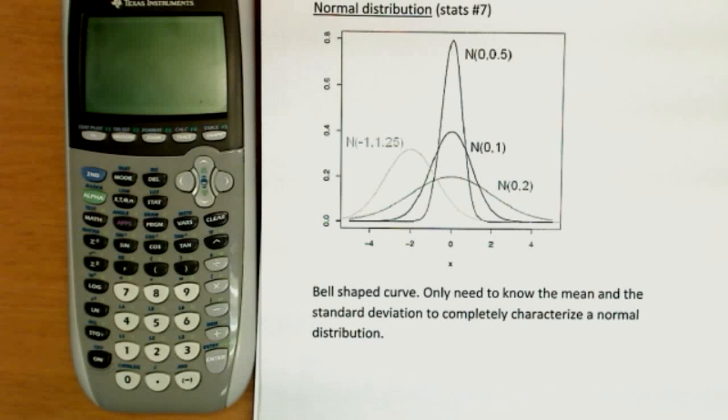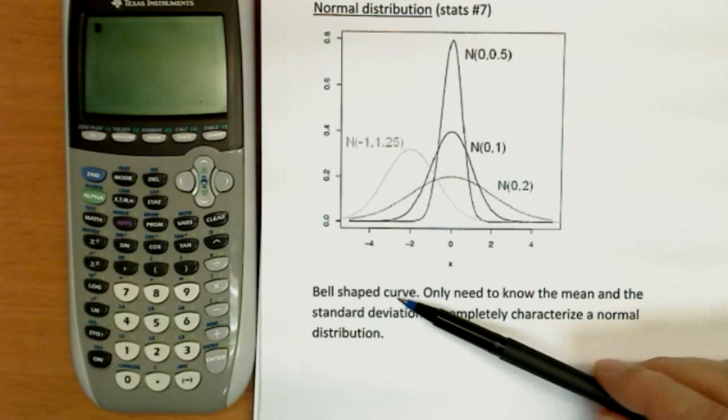Continuing our discussion of stats, now we're going to talk about the normal distribution, often also referred to as the bell-shaped curve.